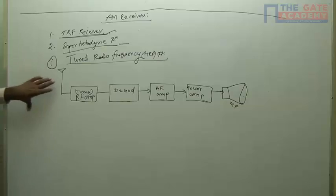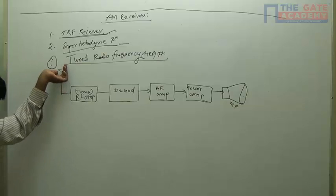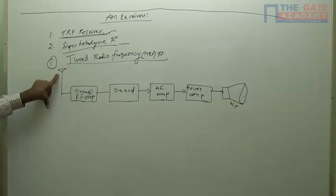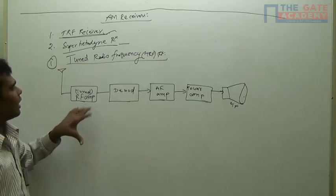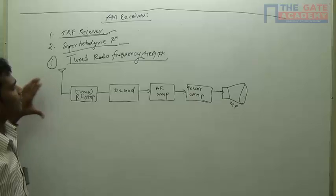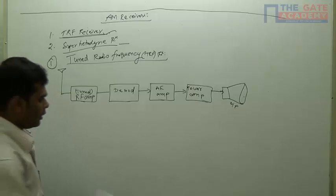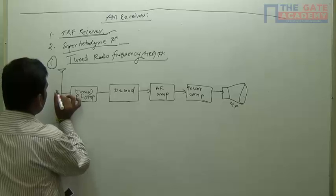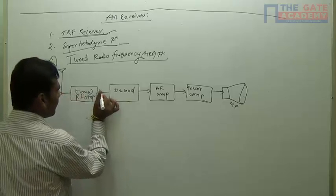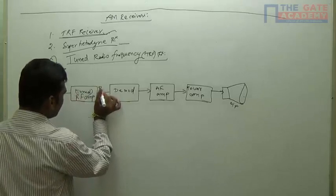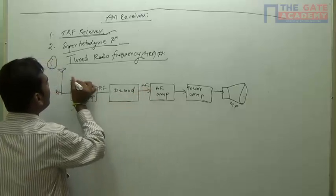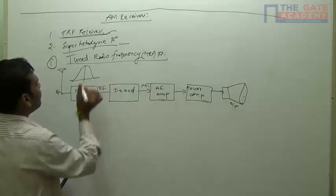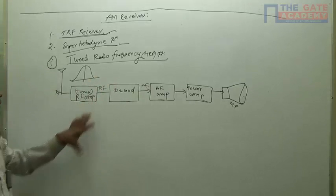Here what is going to happen? Whatever we transmit, the signal that we are receiving through an antenna. This is an antenna symbol. We are giving to the RF amplifier. The signal has traveled from long distances and it came and is receiving here. After receiving this signal, what we have to do? We have to again modulate it.